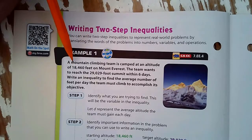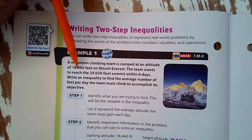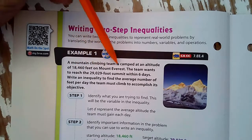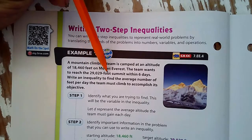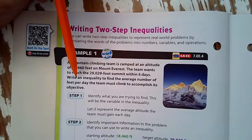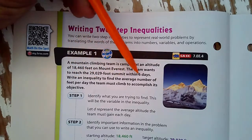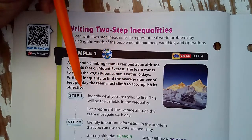In our example, a mountain climbing team is camped at an altitude of 18,460 feet on Mount Everest. The team wants to reach the 29,029-foot summit within six days. Write an inequality to find the average number of feet per day the team must climb to accomplish its objective.